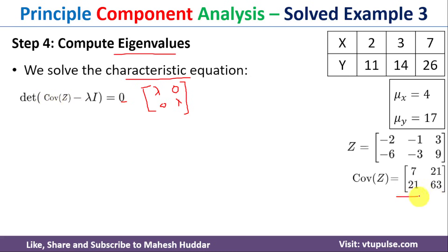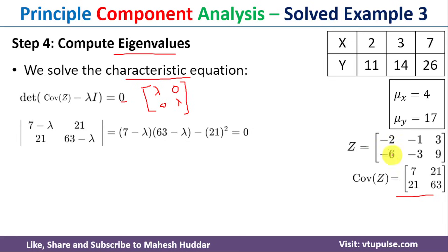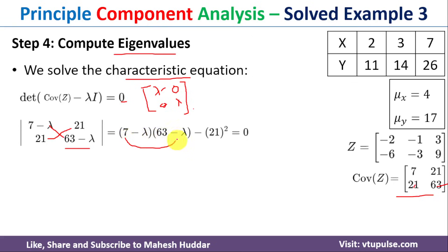Substituting, we get: det([[7−λ, 21], [21, 63−λ]]) = 0. The determinant is computed as (7−λ)(63−λ) − 21×21 = 0. Expanding: 7×63 − 7λ − 63λ + λ² − 441 = 0, which simplifies to λ² − 70λ = 0.